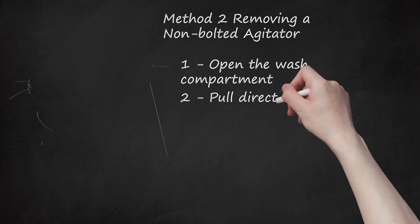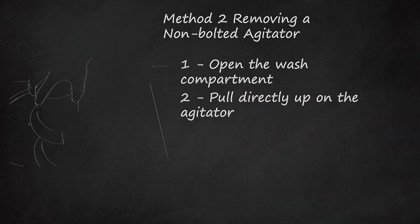Step 2: Pull directly up on the agitator. Brace yourself firmly against the washing machine and pull directly upward on the agitator. With some force, the agitator should come off of its mounting, exposing the drive shaft underneath. Avoid twisting or jerking the agitator from side to side. Don't hurt yourself by straining too hard to remove the agitator. See below for more information on how to handle a stuck agitator.